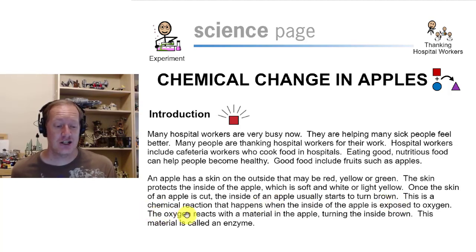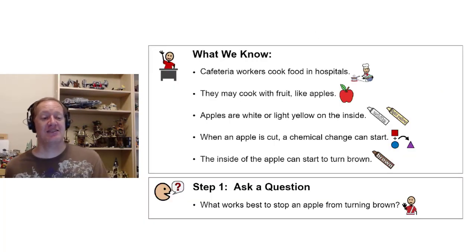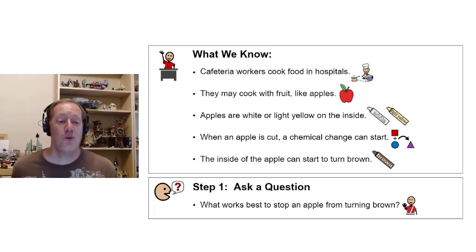This is a chemical reaction that happens when the inside of the apple is exposed to oxygen. The oxygen reacts with the material in the apple, turning the inside brown. This material is called an enzyme. So we're going to be looking at what happens when you cut an apple.